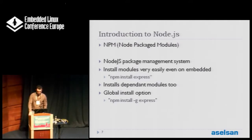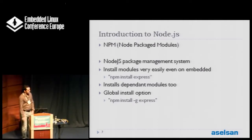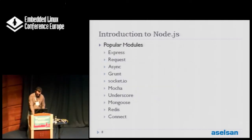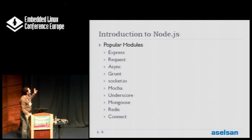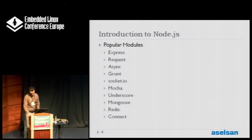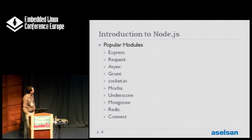NPM also has a global install option, so if you have many applications using Node with common modules, you can install them globally and don't have to install them for each application. These are some examples of popular modules on the NPM website. Here we use Express for our RESTful web server, and Socket.io for web client-server WebSocket communication. You can find much more on NPM — these are just examples.